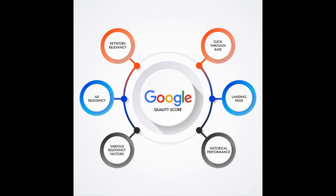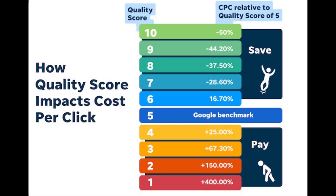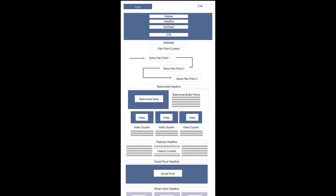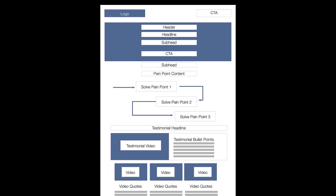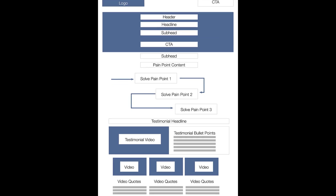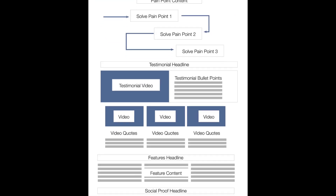Advertising platforms use a similar SEO algorithm to determine your quality score — an arbitrary score given to each page based on how it relates to the keyword. This helps advertising platforms keep irrelevant information off certain searches, but it also allows them to artificially inflate the price of a click. The code structure for this type of page is similar to the SEO structure, with a few major differences.